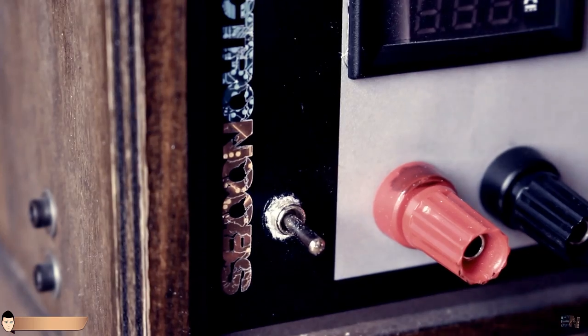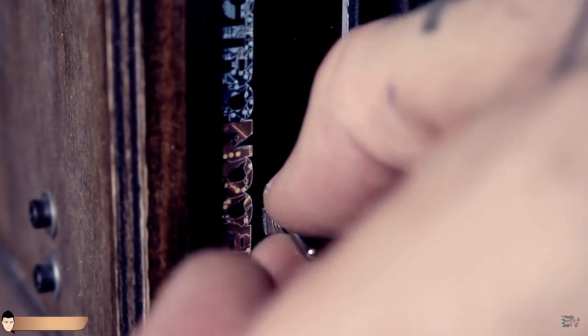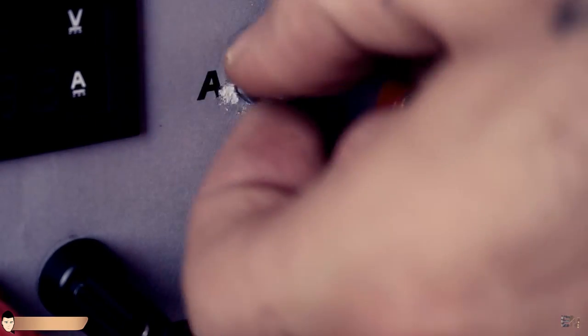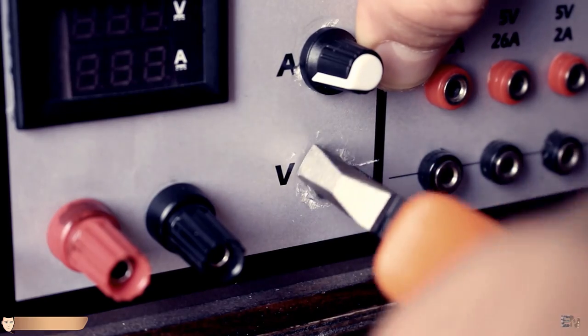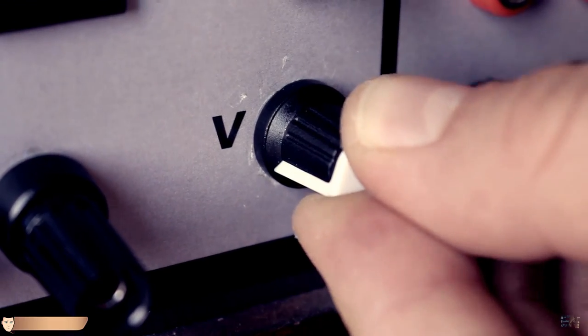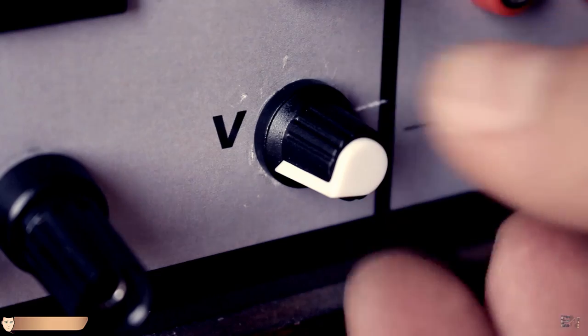Screw in place the enable switch to the front panel. Also screw the 2 potentiometers. The current control to the top and the voltage on the bottom. Finally add the plastic knob for the potentiometer. This will give it a nicer look.